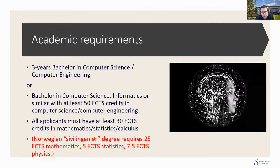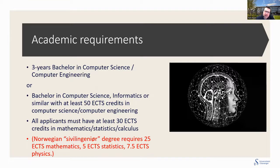In Norway, we have a title called Civil Ingenieur. If you want to have this Master of Science title after you are finished, then you need to have 25 ECTS in Mathematics, at least five ECTS in Statistics, and at least seven and a half ECTS in Physics from the Bachelor.